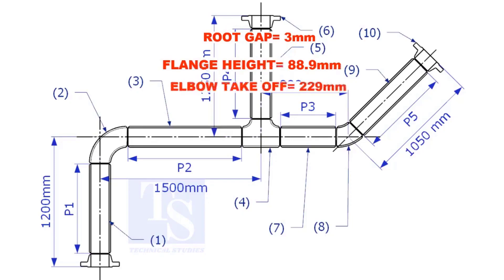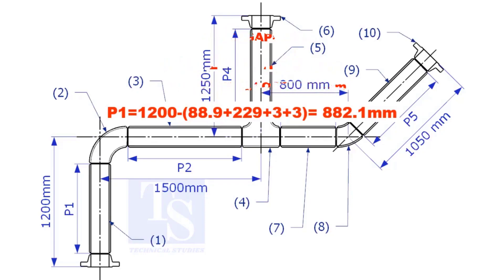Substitute the sum of the height of the flange, elbow takeoff, and 2 root gaps from the total length of 1500. Length of pipe P1 is 882.1mm.